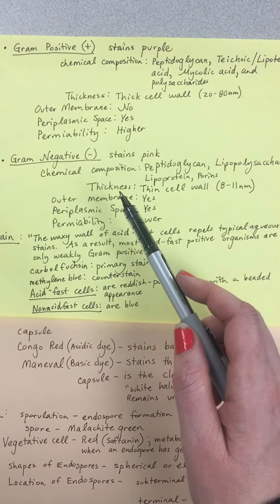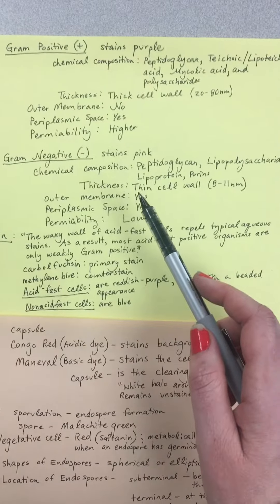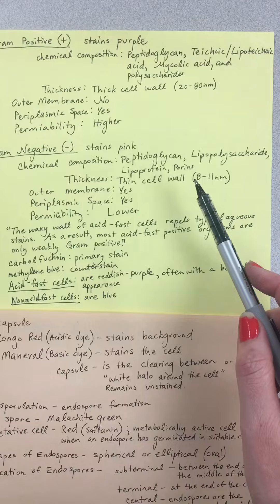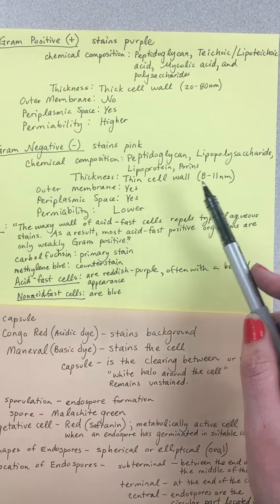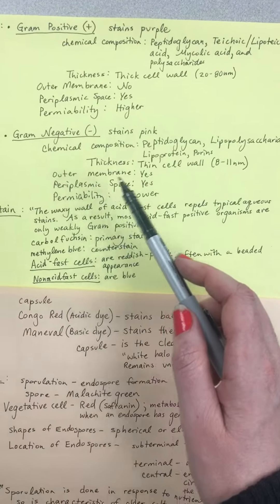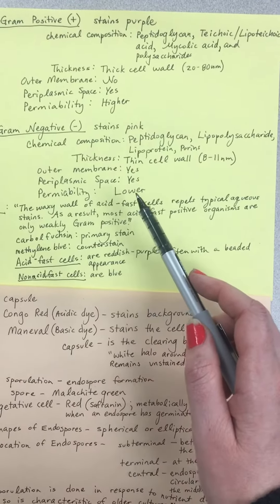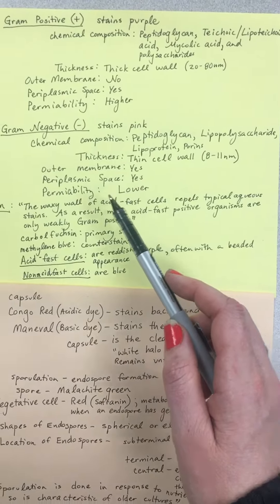The gram-negative cell wall is much thinner than the gram-positive cell wall. The gram-negative cell wall is only 8 to 11 nanometers thick. Your gram-negative microorganisms have that outer membrane. This makes them have lower permeability.